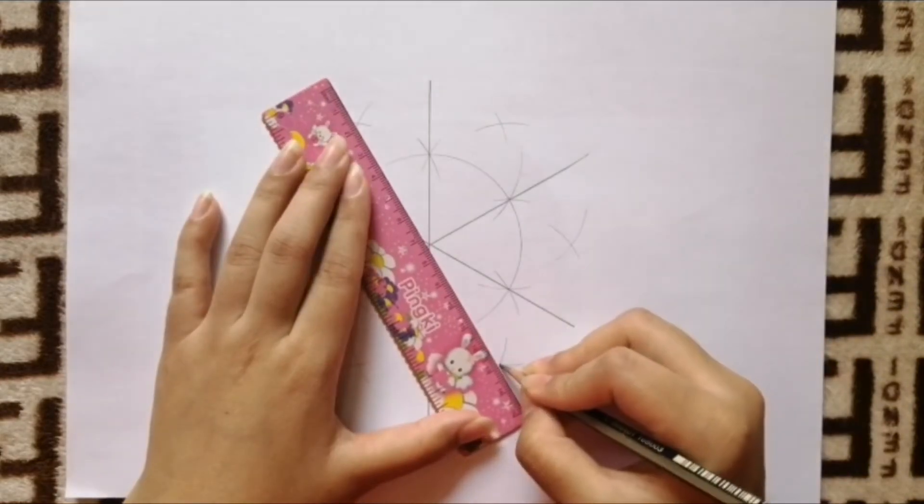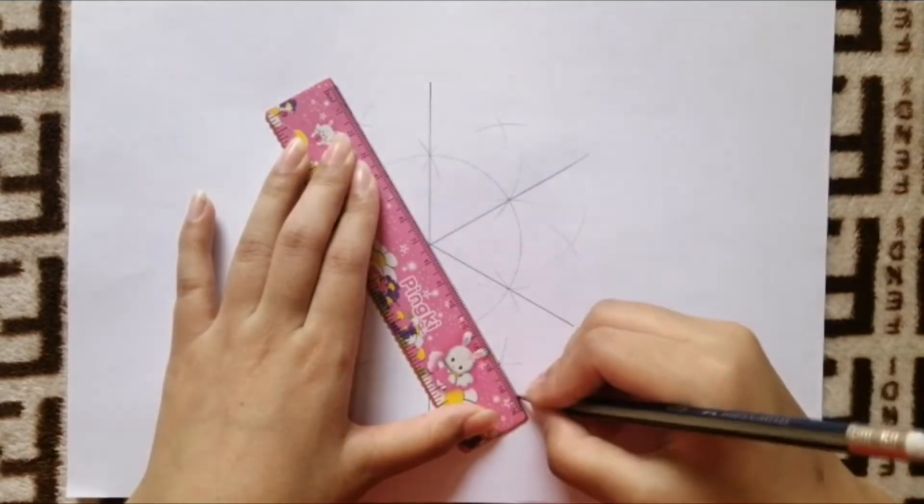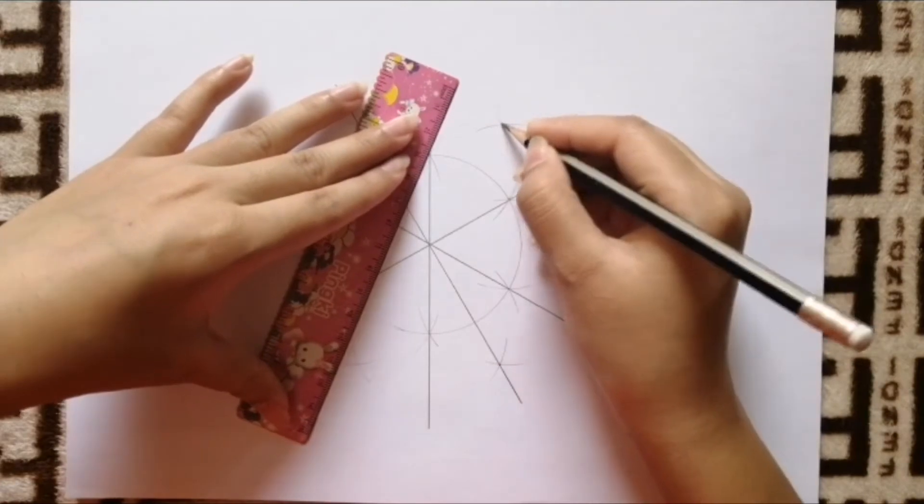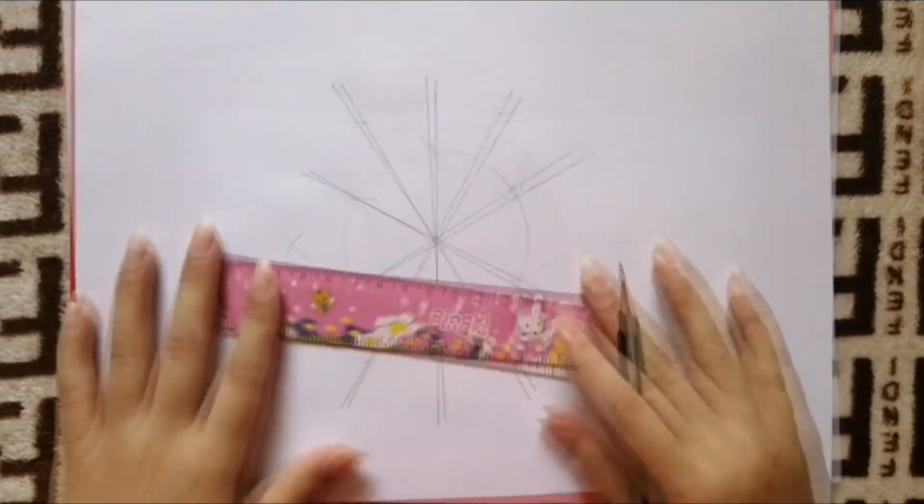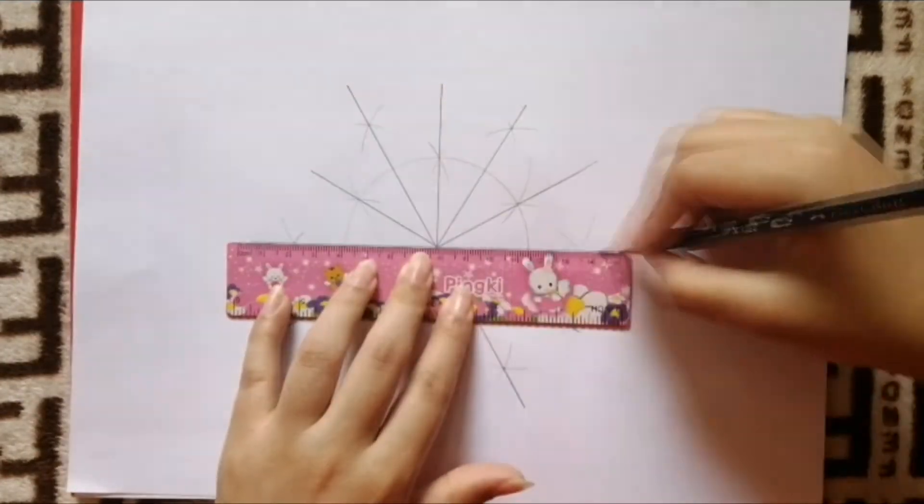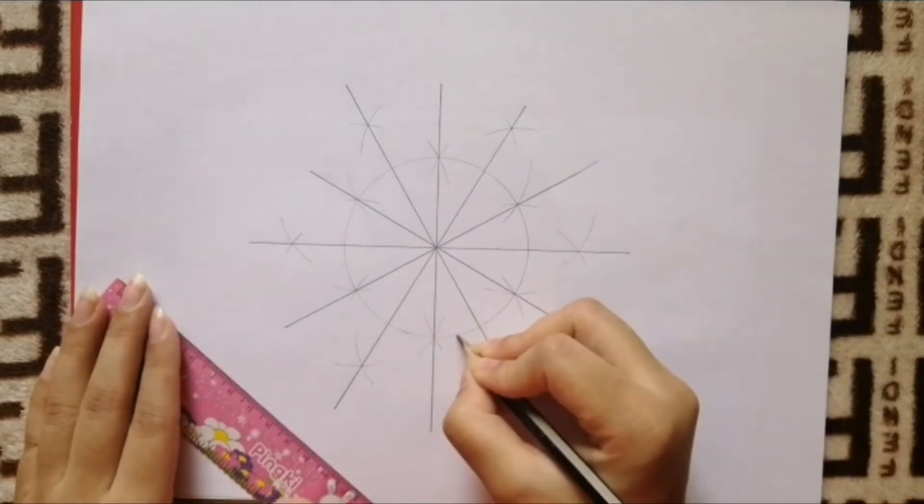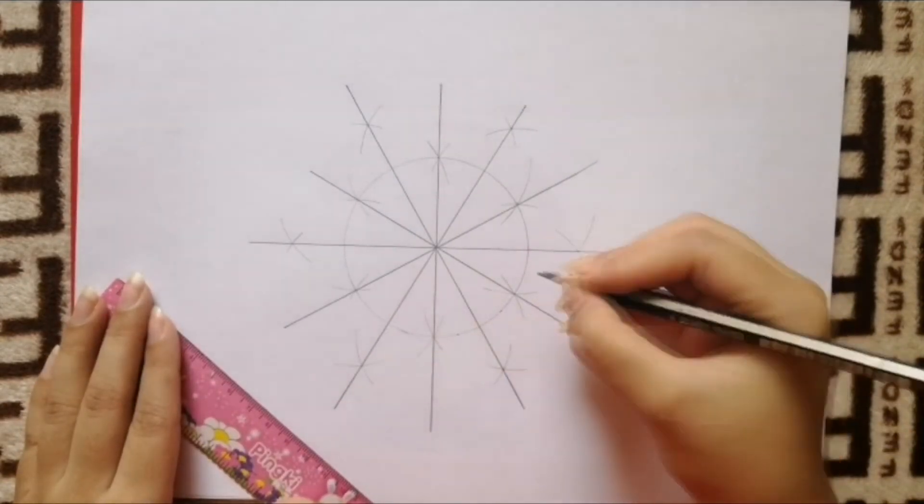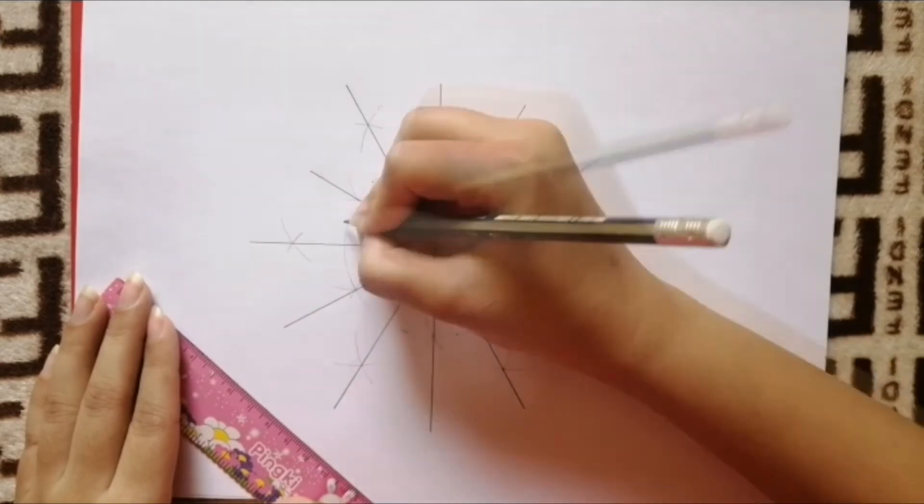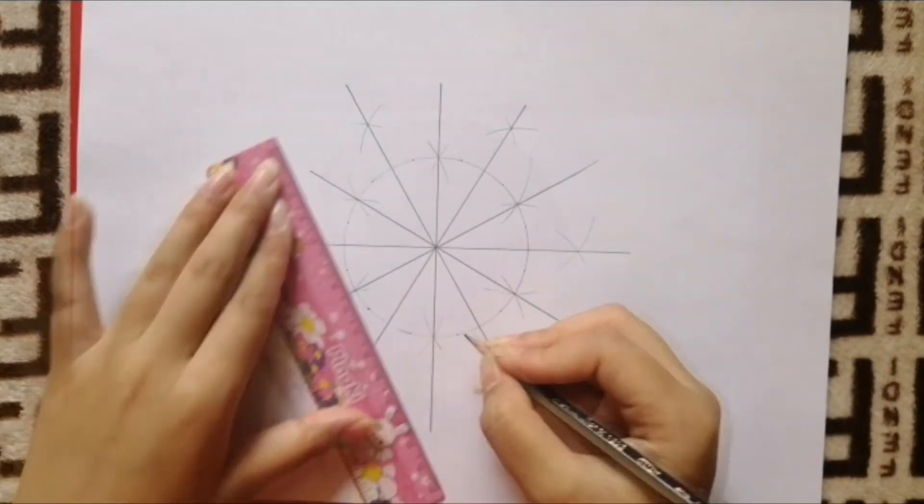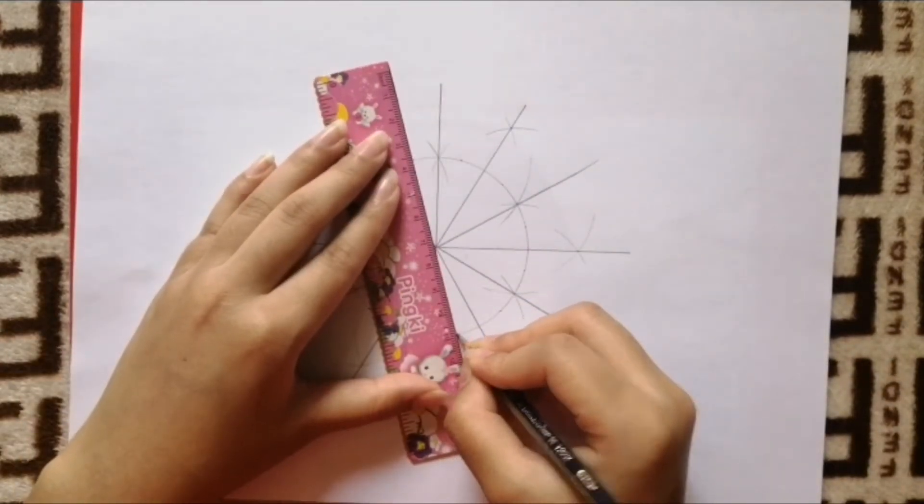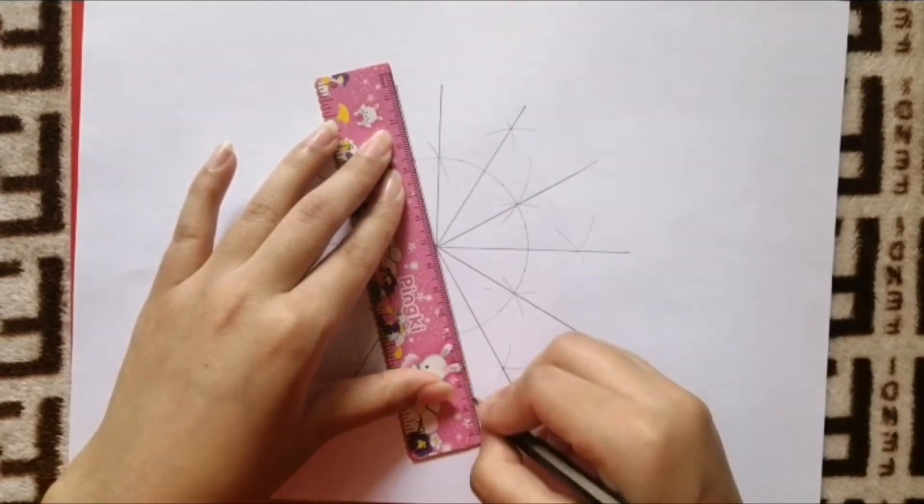Then take your ruler and pencil and join the opposite crosses like before. Now to get more grid lines, roughly mark a midpoint on the circle between each of these grid lines. Then join the opposite points using a ruler and pencil.